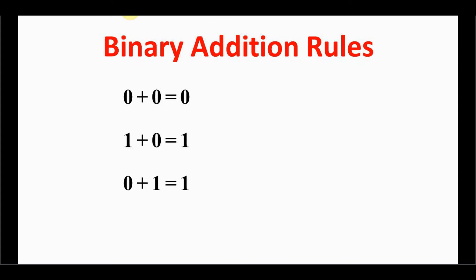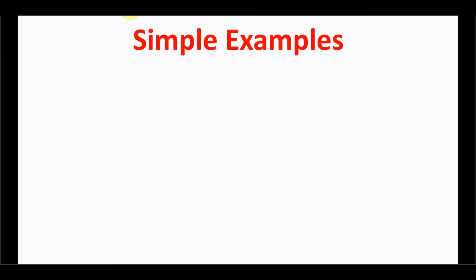One plus one equals one-zero (i.e., binary 10). Examples are provided: if you are adding three ones, you get double-one as the answer — it should be read as 'double one', not eleven. If you add one-zero plus one, the answer is again double-one.